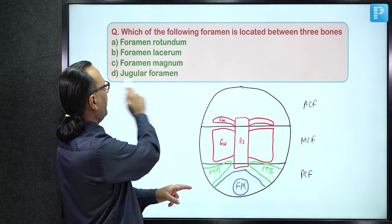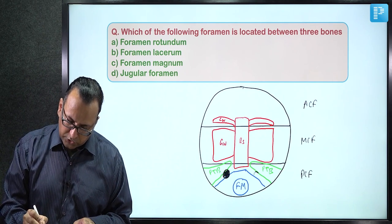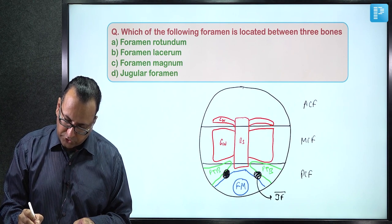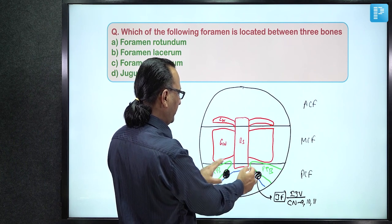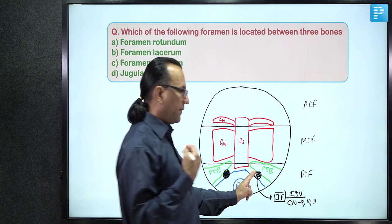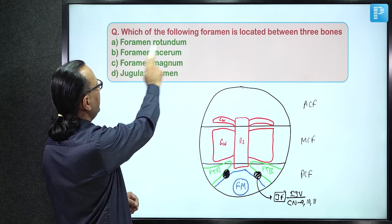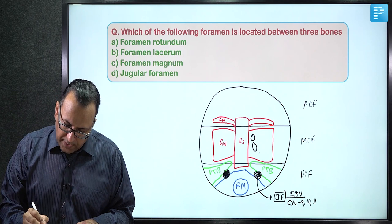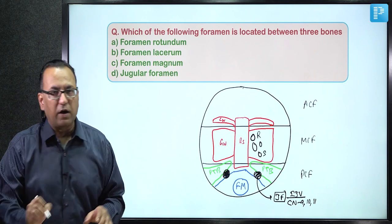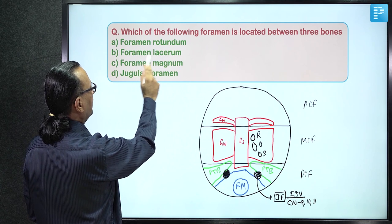The jugular foramen is located between the temporal bone and occipital bone, transmitting the internal jugular vein along with cranial nerves 9, 10, and 11. Foramen rotundum, foramen ovale, and foramen spinosum are all within the greater wing of the sphenoid — a single bone. Foramen magnum is within a single bone — the occipital.